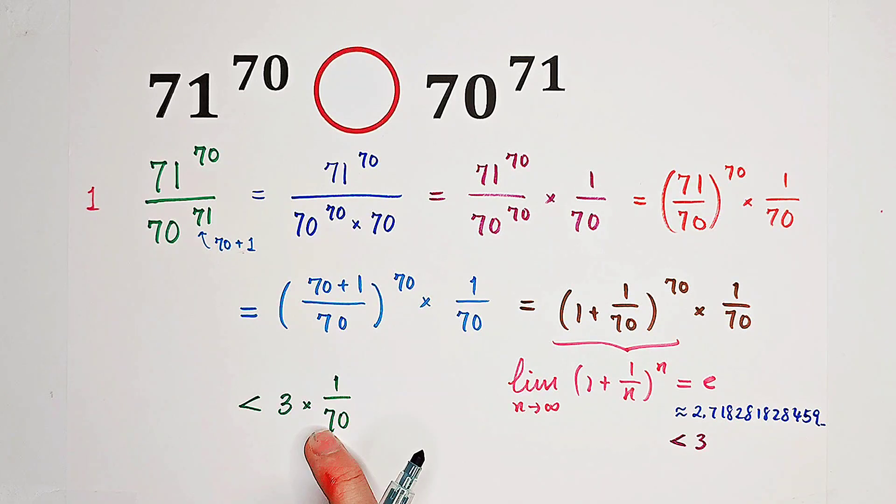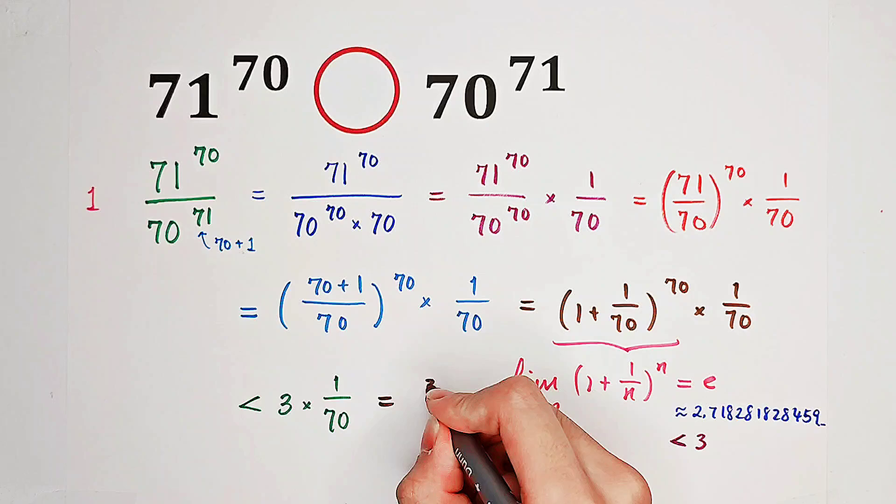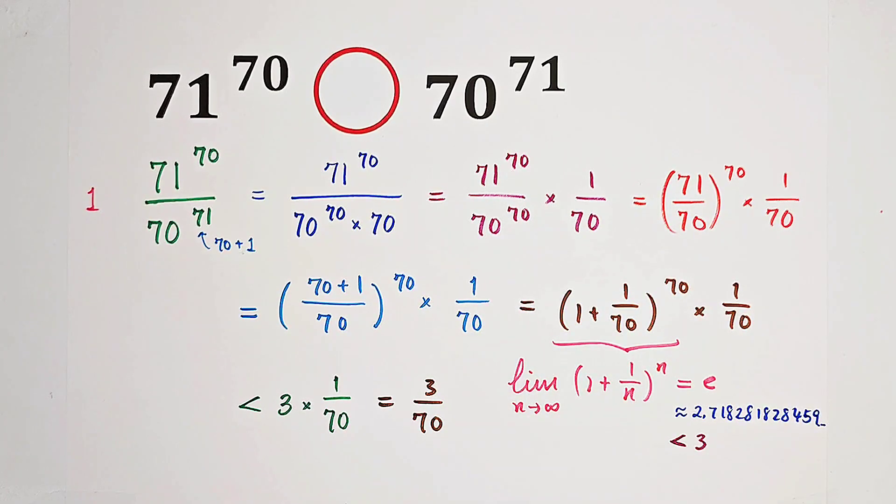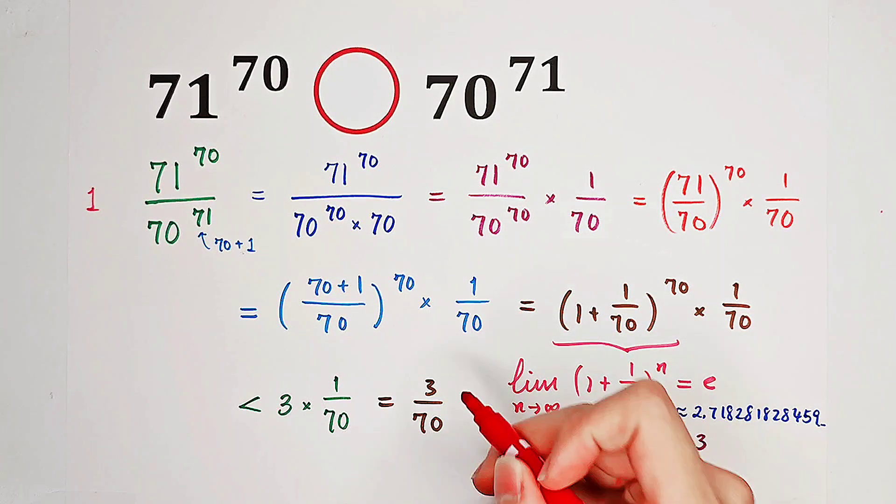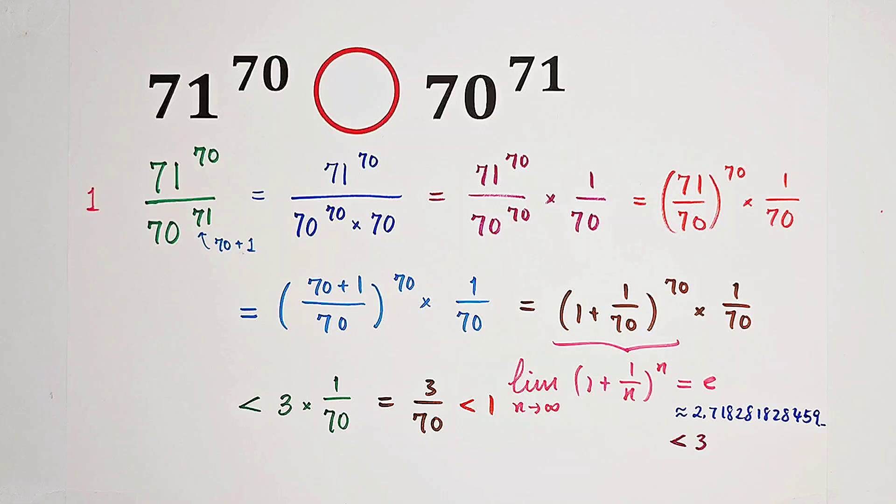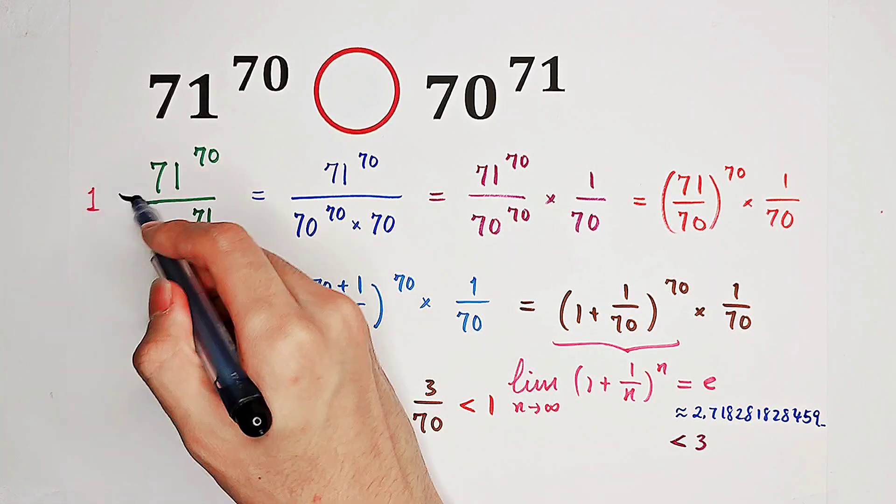And 3 times 1 over 70 is just 3 over 70. And 3 over 70 is obviously less than 1, because 3 is less than 70, isn't it? So, this guy is less than 1.